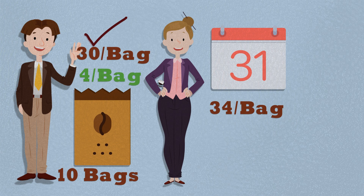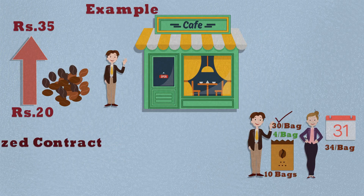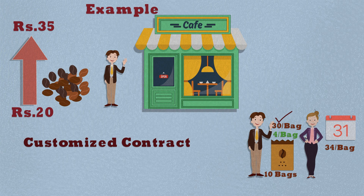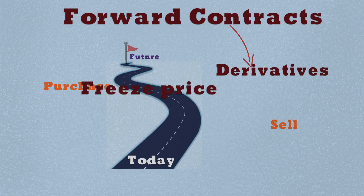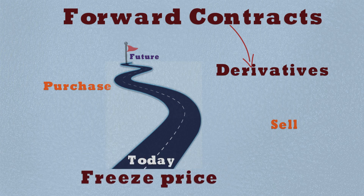Rosie made this contract based on John's requirement. Such a customized contract between two parties to buy or sell an asset at a specified price on a future date is called a forward contract. Since they are customized contracts, they are non-standardized in nature and do not trade on a centralized exchange. The benefit of forwards is that it helps to freeze the future price today and manage future risk, acting as an instrument to hedge risk.